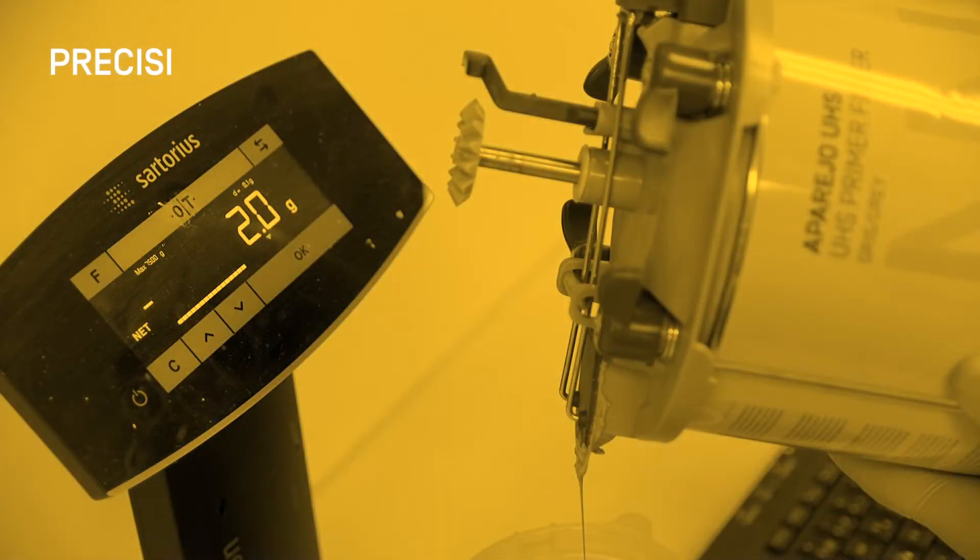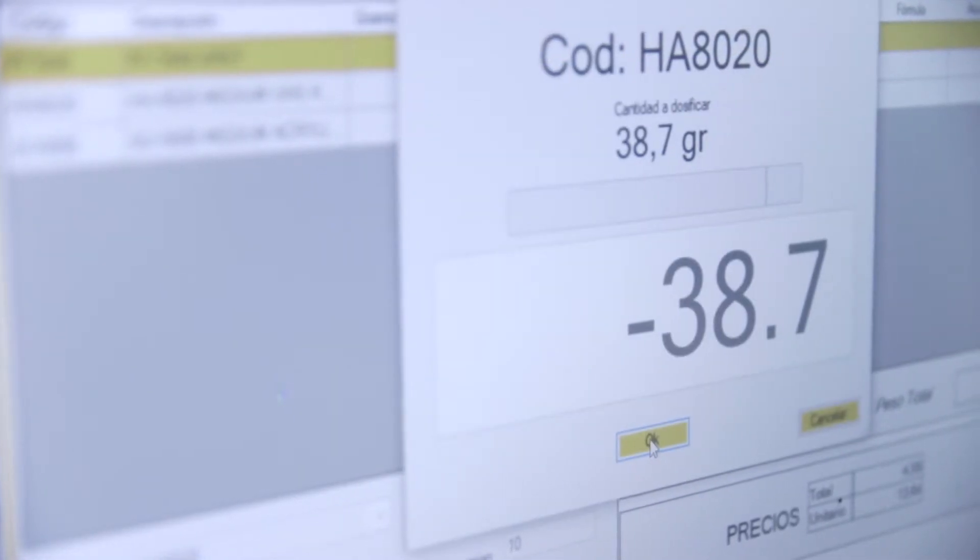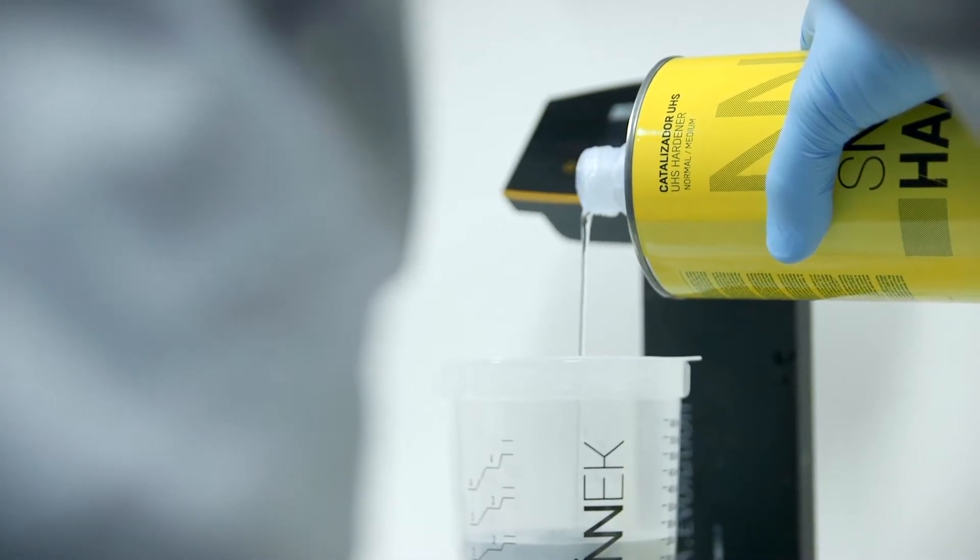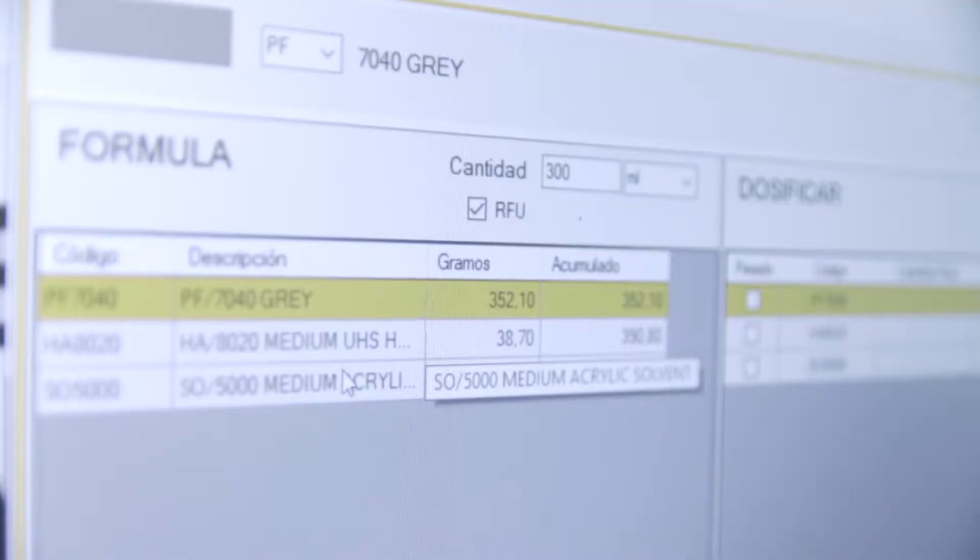Precision scales are the most effective method to obtain an accurate mixing ratio. Please note that the data shown on the scales is based on weight and not on volume. Its combination with the colour management software will allow us to work with greater accuracy.